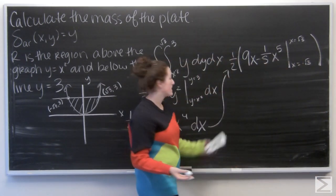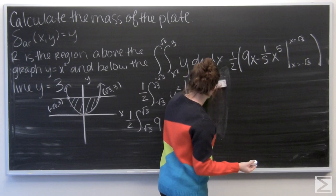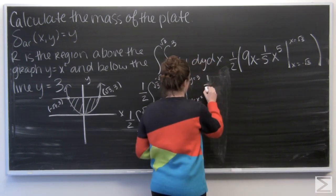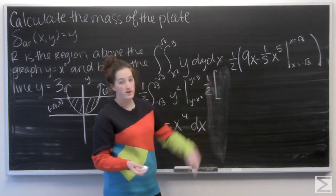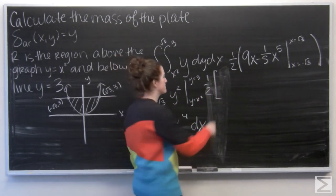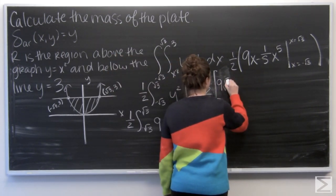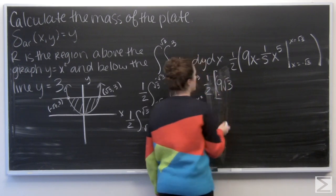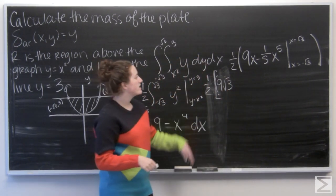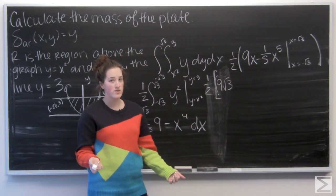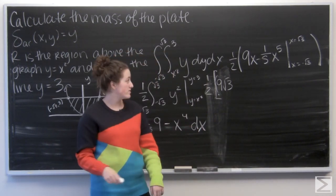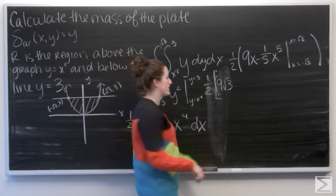So let's go ahead and start plugging things in. Well, 9 times the square root of 3 is just 9 square roots of 3. And then minus 1 fifth times the square root of 3 to the fifth. Well, the square root of 3 to the fifth is going to be 9 square roots of 3. And then divide by 5.